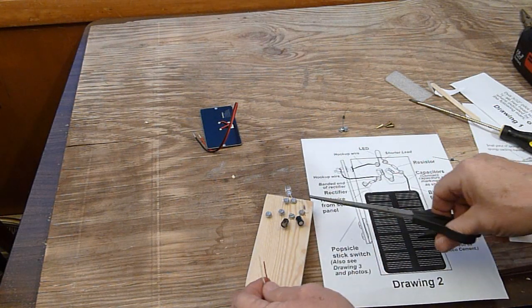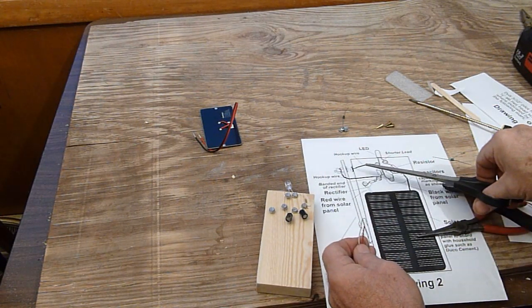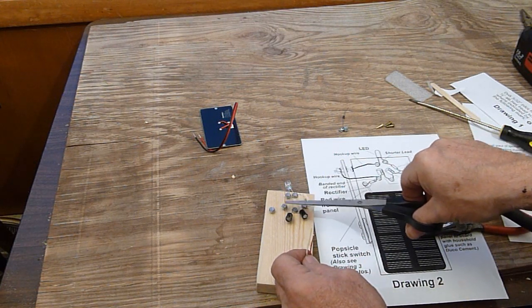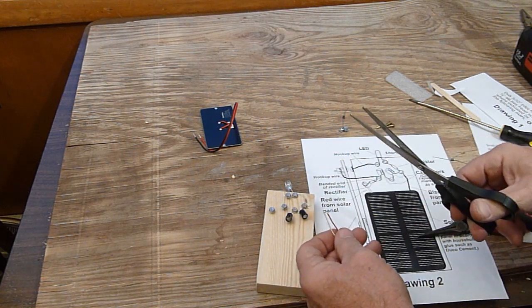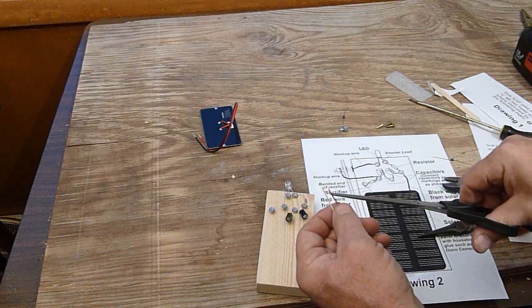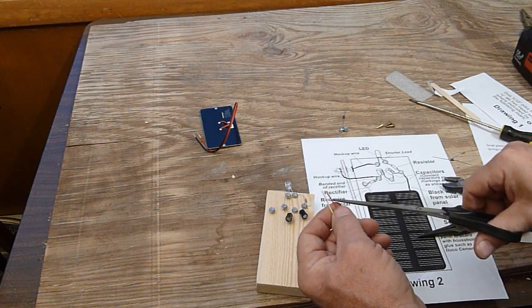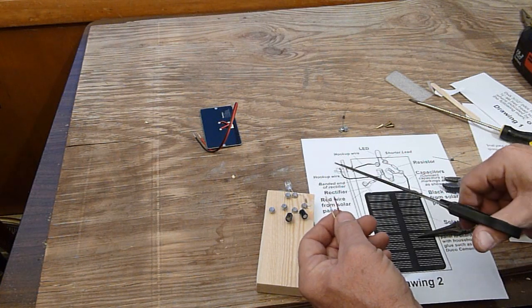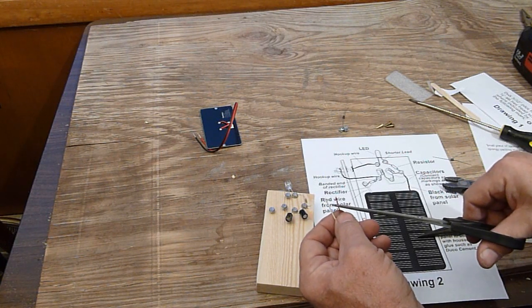Now we have to hook up these wires to this screw and to this screw. You can't connect the insulation. This is red insulation plastic and this is white. You have to get to the metal, which is copper.